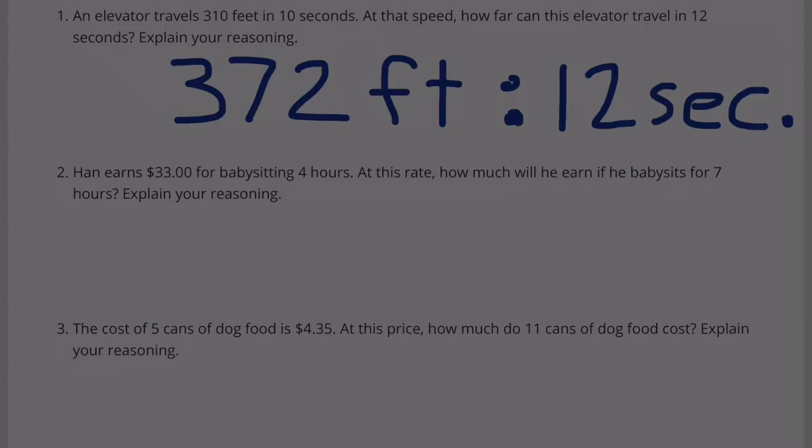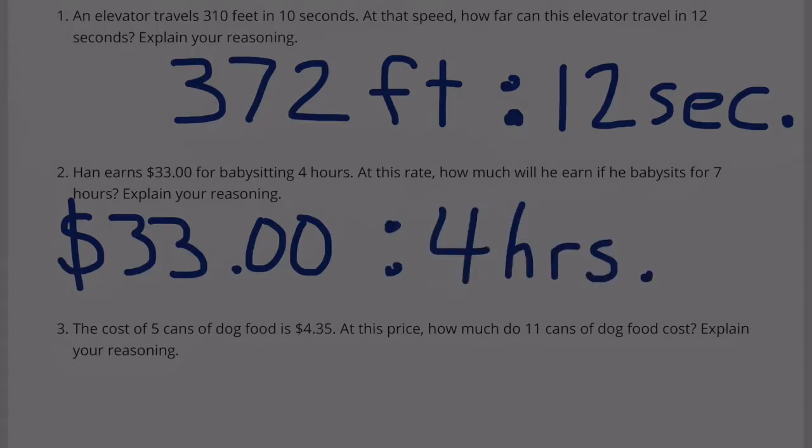Number 2: Han earns $33 for babysitting 4 hours. At this rate, how much will he earn if he babysits for 7 hours? Explain your reasoning.